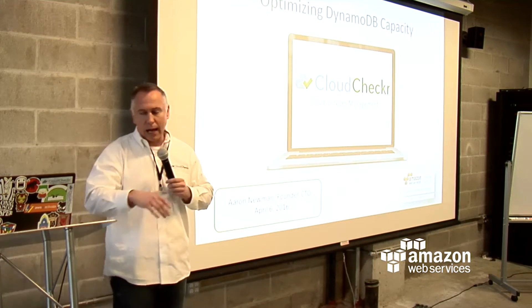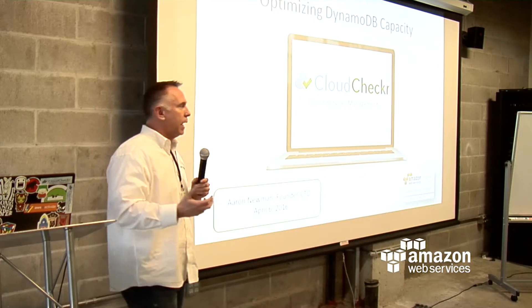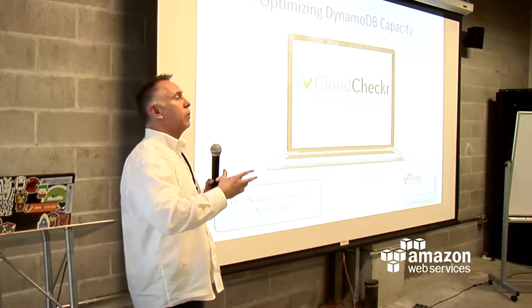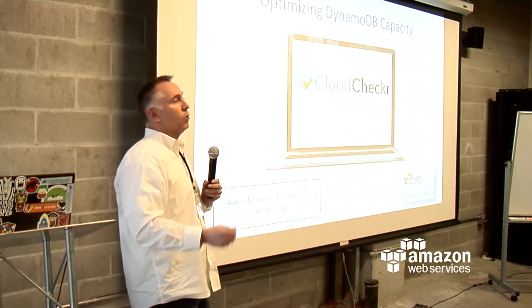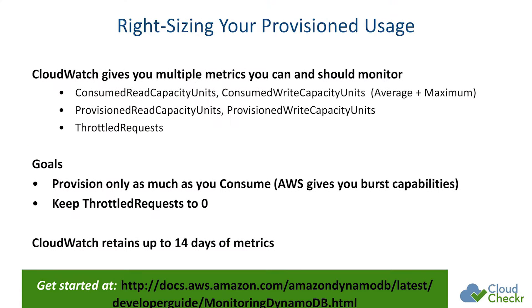There are lots of little gotchas, and all the data is there in Amazon. Amazon has all the data, it's just in different places. You've got to pull it together to make intelligent business decisions. So right-sizing: the most important thing you need to look at — there are two things you have to do. One is you have to choose your provisioned capacity, and you have to do that for both read and write.